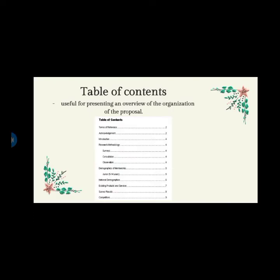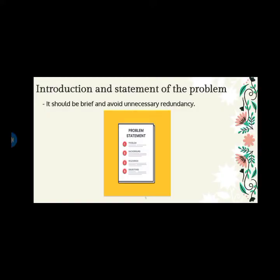A table of contents is not always considered necessary, especially for brief proposals, but it is useful for presenting an overview of the organization of the proposal. An introduction is not always considered necessary, as it tends to duplicate information that follows, but an opening statement characterizing what is being proposed can help introduce the subject to the reader. Some authors use the introduction to outline the major components of the proposal. If included, it should be brief and avoid unnecessary redundancy.